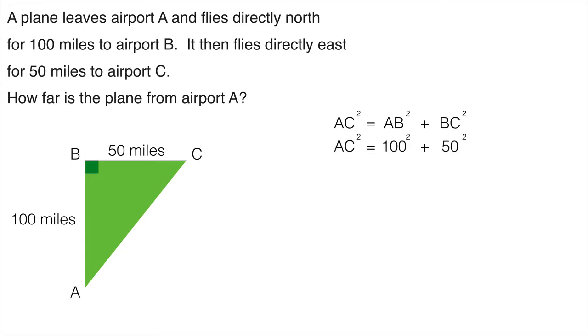100 squared, well that's 10,000. And 50 squared, well that's 2,500. If we add those two together we get that AC squared is equal to 12,500.